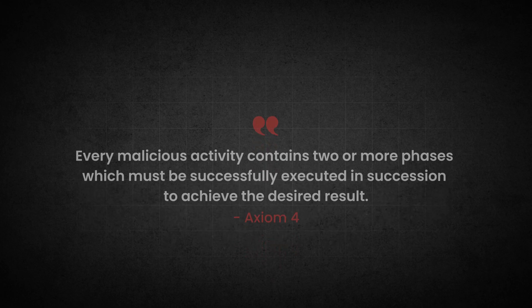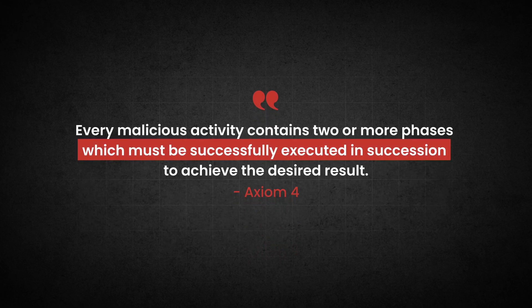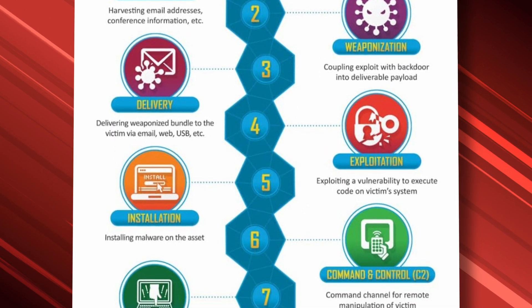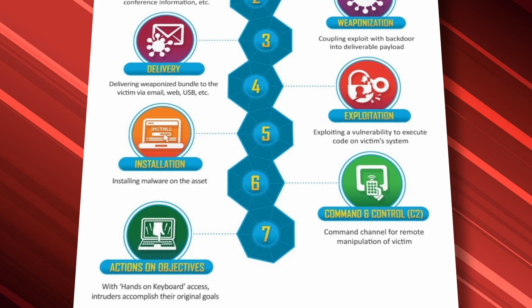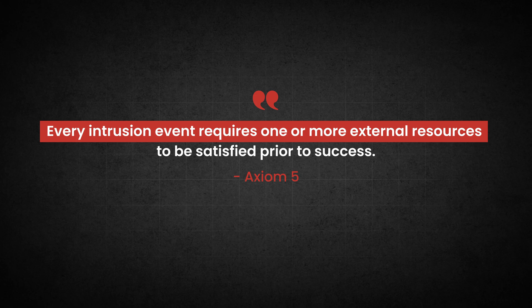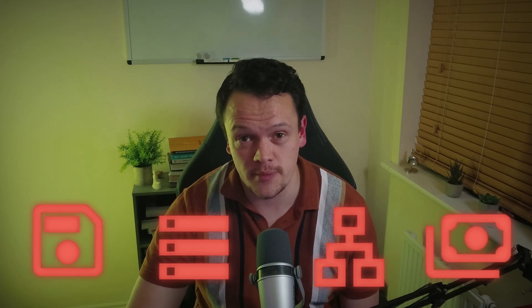Axiom 4 states that every malicious activity contains two or more phases which must be successfully executed in succession to achieve the desired result. This relates to the cyber kill chain — an attacker must perform several steps from initial reconnaissance to actions on objective. Axiom 5 states that every intrusion event requires one or more external resources to be satisfied prior to success, highlighting that adversaries cannot exist in a vacuum. They require software, hardware, network access, and financial resources, meaning an adversary must use infrastructure and must have access to a victim.